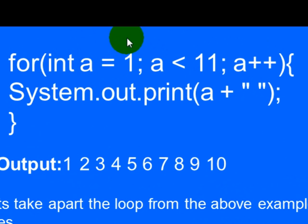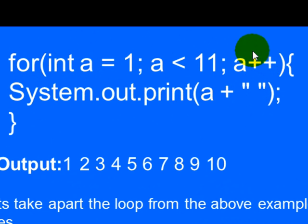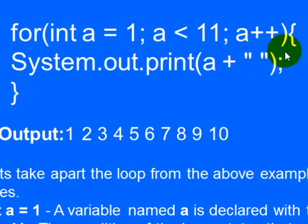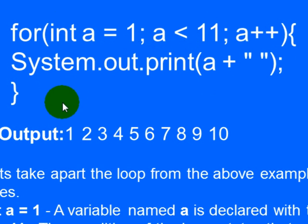First, 1 is assigned to a. Then the condition is checked: 1 is less than 11, which is true, so the statement executes and the value of a is printed. Then control goes to the update part — a becomes 2. Again 2 is less than 11, true, so 2 is printed. Then a is incremented to 3; 3 is less than 11, true, and so on. When 10 is printed, a becomes 11. Now 11 is less than 11 is false, so the statement is not executed — the for loop body will not run and control transfers to the next statement following the for loop.